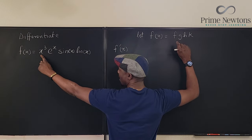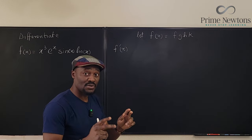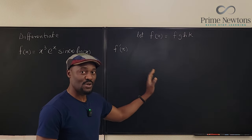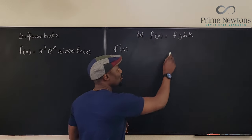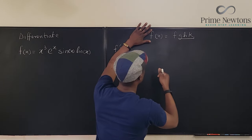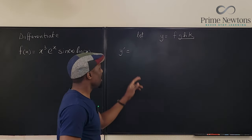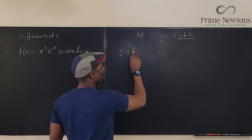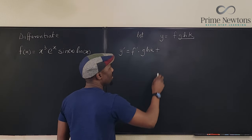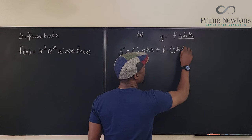This could be our f, this would be g, this is h, and this is k. Remember the product rule says that whenever you have the product of two functions, you differentiate the first and keep the second, then you keep the first and differentiate the second. We're going to try and do that here, but I'm going to treat all of these as a single function the first time. So I'm going to have the derivative of the first, f prime, multiplied by the second — I keep g, h, k — plus I keep the first and multiply by the derivative of the second, (g·h·k) prime.